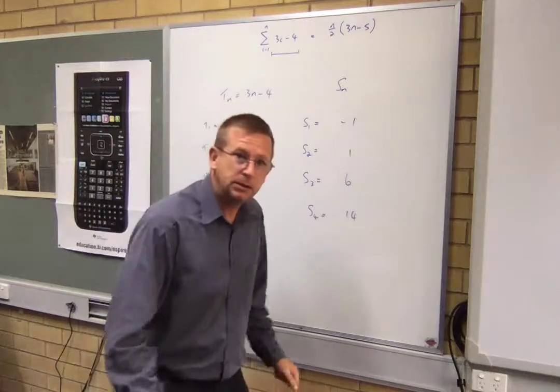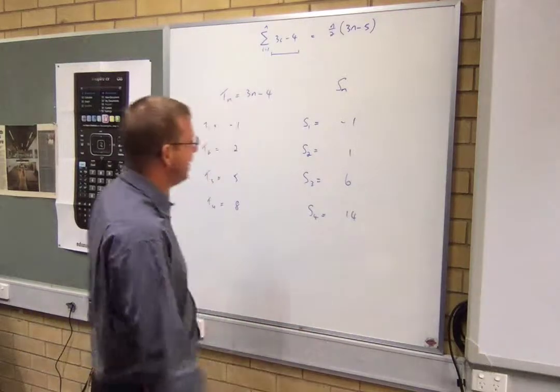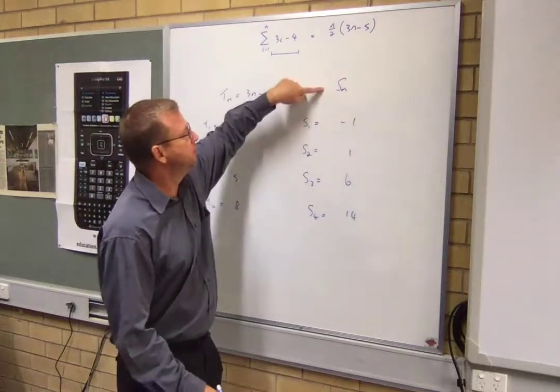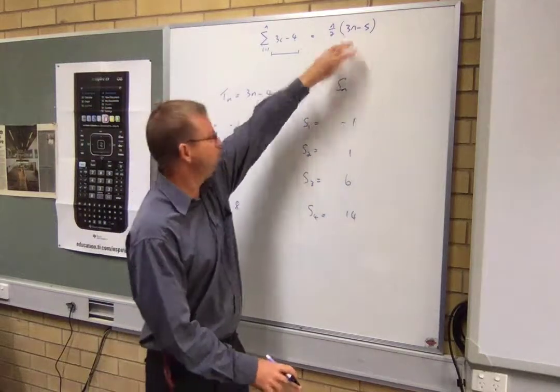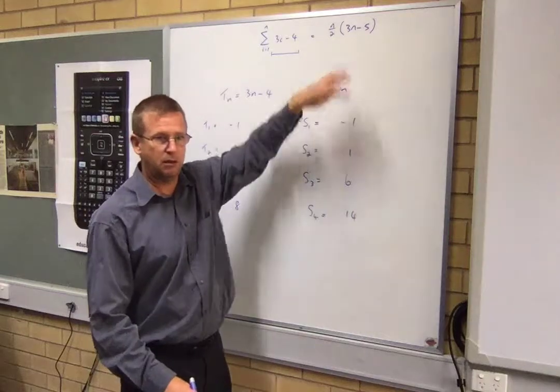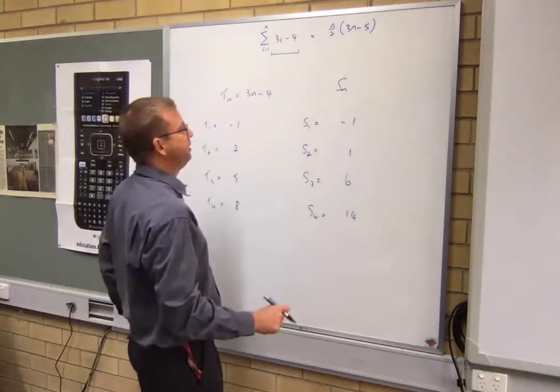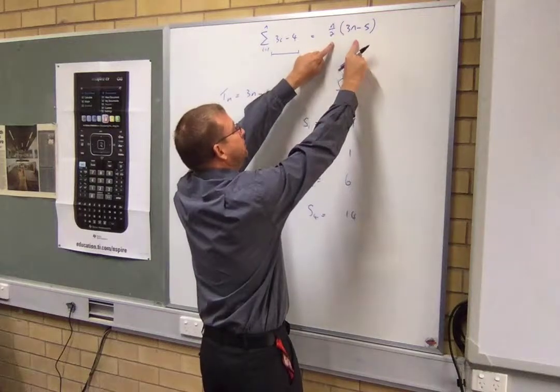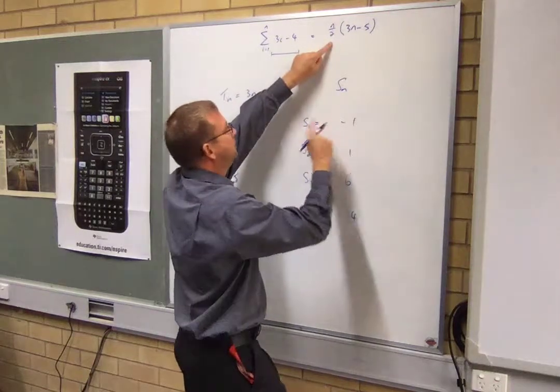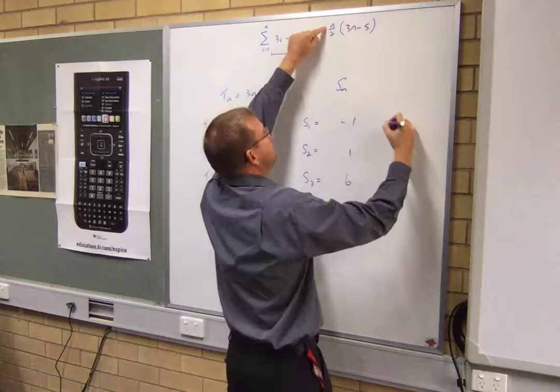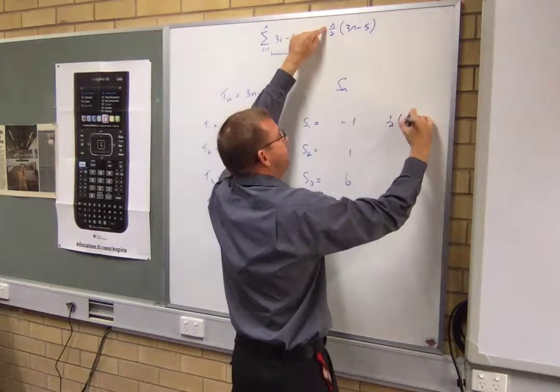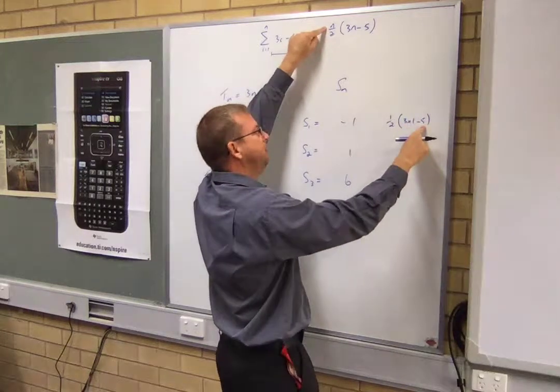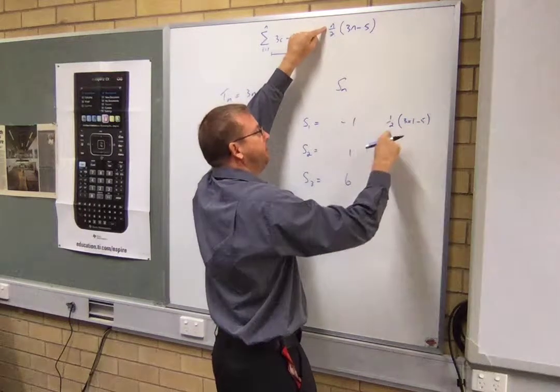Someone who really likes patterns has worked out that rather than just using the rule, there's a shortcut to get there in this terminology. So let's go, this is the rule. So n is one. What's one on two? Three times one minus five.